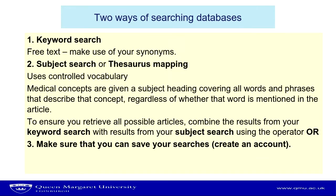You can do both keyword searching and subject searching when you get to the databases. If you want to make sure you've retrieved all possible articles on a particular subject, you can combine your keyword search results with the results from your subject search using the operator OR. To do this you need to save your searches, and to do that you need to create an account with the databases you use — it only takes a few minutes. It means you can retrieve your search history, edit past searches, and combine one or more searches together to see what the outcome is.